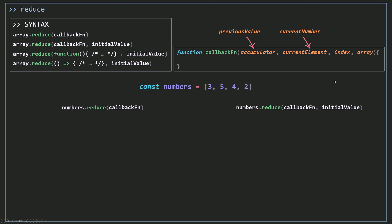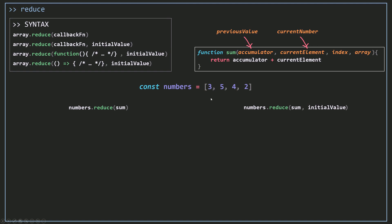Instead of using numbers directly, you can use the fourth parameter, the array. Your callback function must return a value — if you don't, undefined will be returned. You must return a value each time your function is called by reduce, because the goal is to reduce the array to a single value. Here I'm returning the accumulator plus the current element, essentially summing the numbers. I'll call this callback function 'sum', and pass in an initial value of 0.